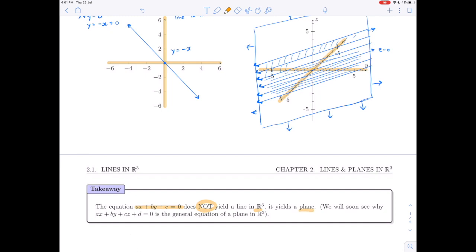We're going to see very shortly in the next section that the general equation of the plane, ax + by + cz + d, is the general equation of the plane in R3. So that tells us what the equation of a line in R3 is not. It doesn't tell us what it is. We'll generalize what we know from R2 into R3 in the next video.